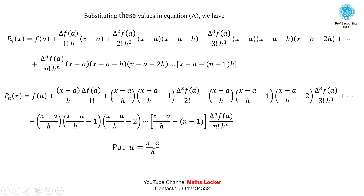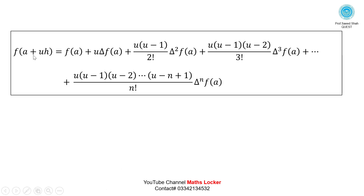Substituting u = (x−a)/h, the formula becomes: f(a+uh) = f(a) + u·delta f(a) + u(u−1)/2!·delta²f(a) + u(u−1)(u−2)/3!·delta³f(a) + ... + u(u−1)(u−2)...(u−n+1)/n!·delta^n f(a). This is Newton's Forward Interpolation Formula.